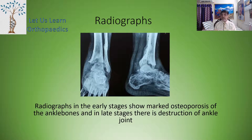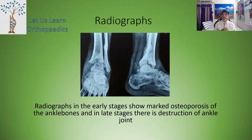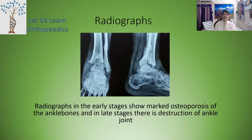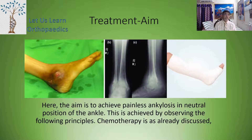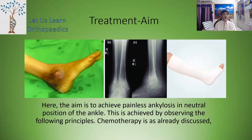There is gross wasting of the calf muscles and evidence of sinus formation. Radiographs in the early stages show marked osteoporosis of the ankle bones. In the late stages, as shown in the present x-ray, there is destruction of the ankle joint — you can see how the ankle joint is completely destroyed. The aim of treatment is to achieve a painless ankylosis in a neutral, plantigrade position of the ankle.